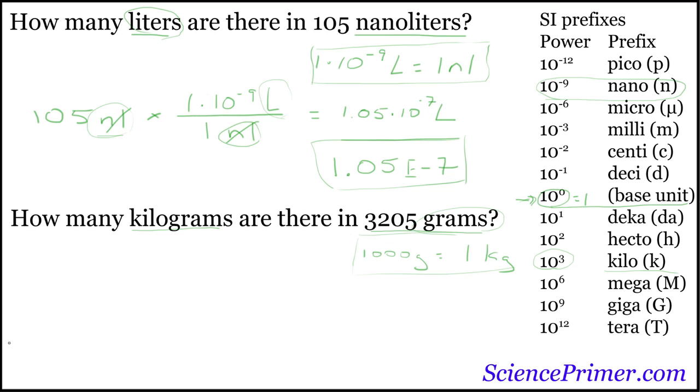Set up the problem the same way. Start with the original number. In this case, 3,205 grams. Set up the formula we're going to use. Put grams in the bottom, kilograms on top, and use these numbers. So, 1,000 grams, 1 kilogram.